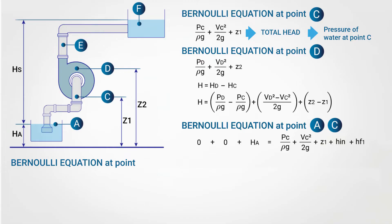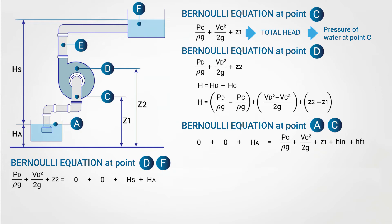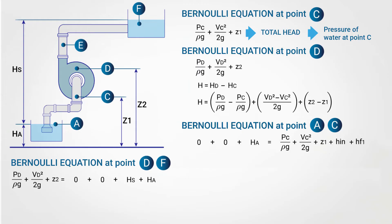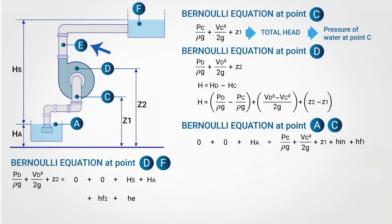Applying the Bernoulli equation at points D and F: the total head at D is PD/ρg plus VD²/2g plus Z2. At point F, the pressure head is zero, velocity is zero, and the height is HS plus HA. Between point D and point F there are losses: HF2, the friction loss in the delivery pipe, and HE, the loss due to water leaving the delivery pipe and entering the upper reservoir.